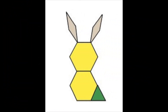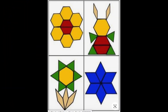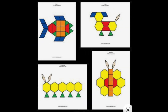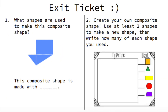Here are some examples of other composite shapes — we can make a lot of really cool pictures when we put shapes together. Notice how there aren't any gaps or overlaps, just like we talked about. For our exit ticket, you can answer on your own paper and then upload it to your Class Dojo portfolio. Number one: what shapes are used to make this composite shape? Your sentence starter is, 'This composite shape is made with blank.' Number two: create your own composite shape using at least two shapes to make a new shape, then write how many of each shape you used. Have fun!